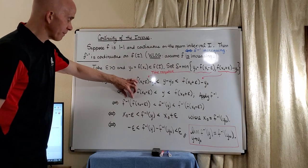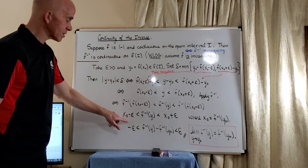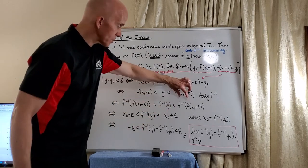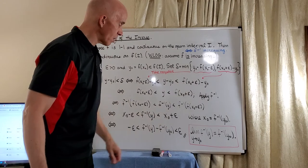These absorb their inverse functions to leave us with x-naught minus epsilon. In the middle, we have f inverse of y, and then these absorb to give us x-naught plus epsilon.